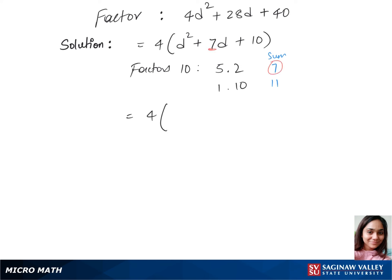So we'll use the values 5 and 2 to plug into our expression. Now we have 4 times, inside the brackets, we have d plus 5 times d plus 2. And this is our final answer.